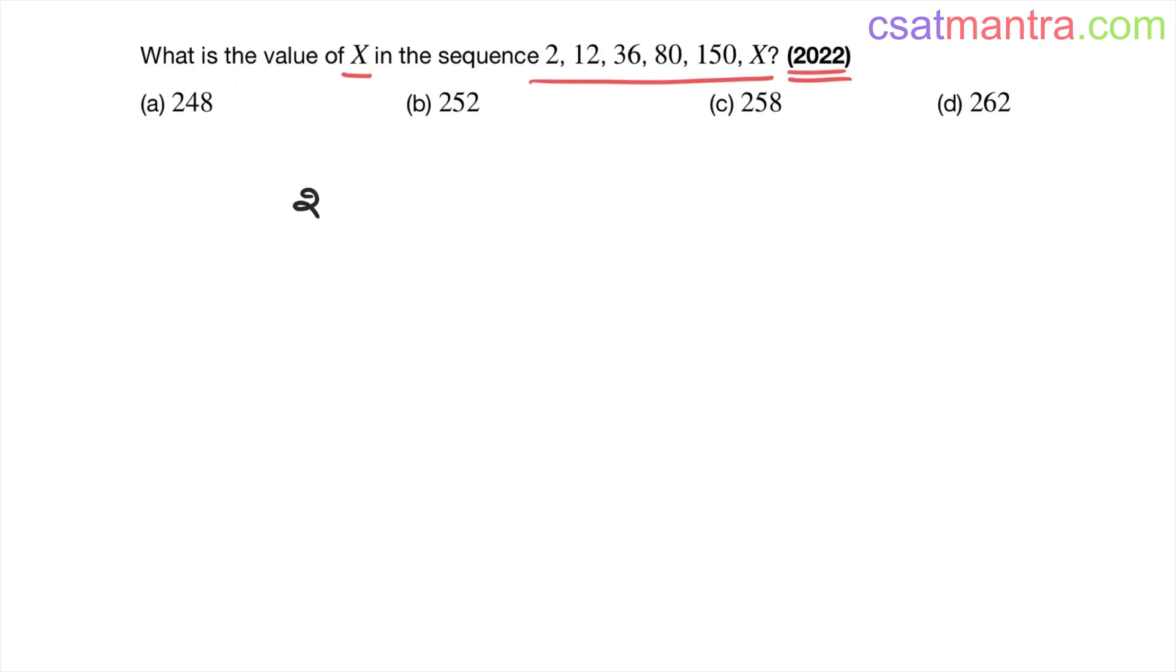Okay, the sequence is 2, 12, 36, 80, 150, X. Find out the difference: then here 24, here 44, here 70. The difference here is X minus 150.